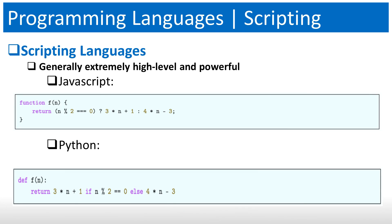The next higher level is called scripting languages. These are generally extremely high-level and powerful. Two examples are JavaScript and Python. The difference between these and high-level languages like C#, C++, and C is that scripting languages are considered dynamic languages.